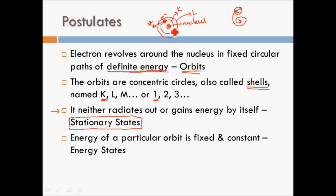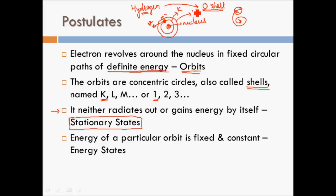The energy of a particular orbit is fixed and constant. For example, for the hydrogen atom, the energy of the K shell will always remain the same value. The energy of any particular shell — say shell O — will have the same energy irrespective of which hydrogen atom you are measuring. That is why these orbits are also called energy states or fixed energy states. You can call them stationary states, energy states, orbits, or shells, named K, L, M or 1, 2, 3, 4, and so on.